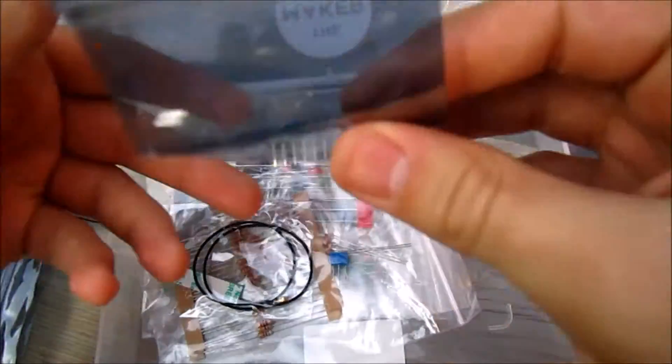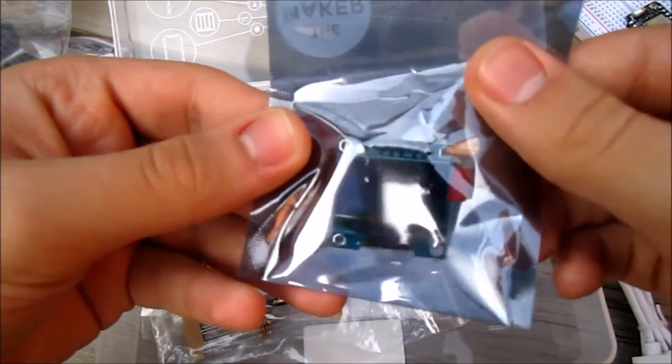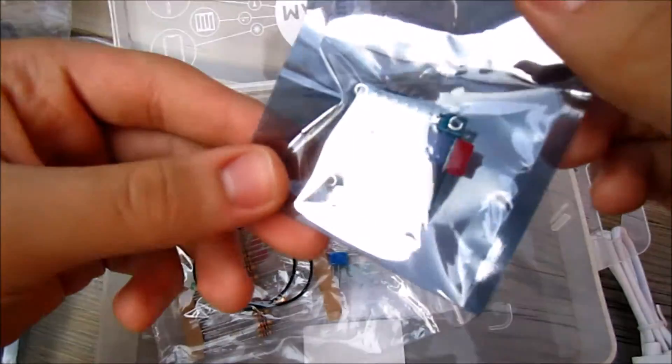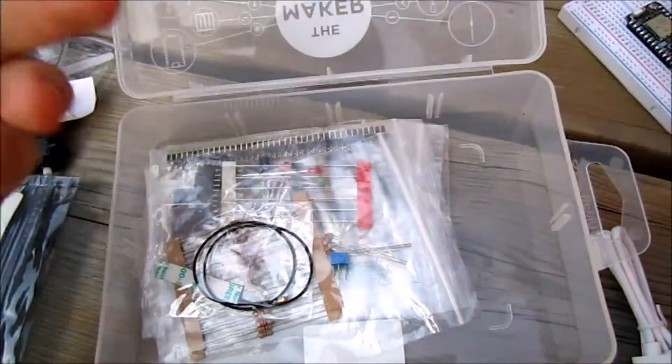Next up we have a one inch display—this is an OLED display. This can be used to output text to the display through the Photon.